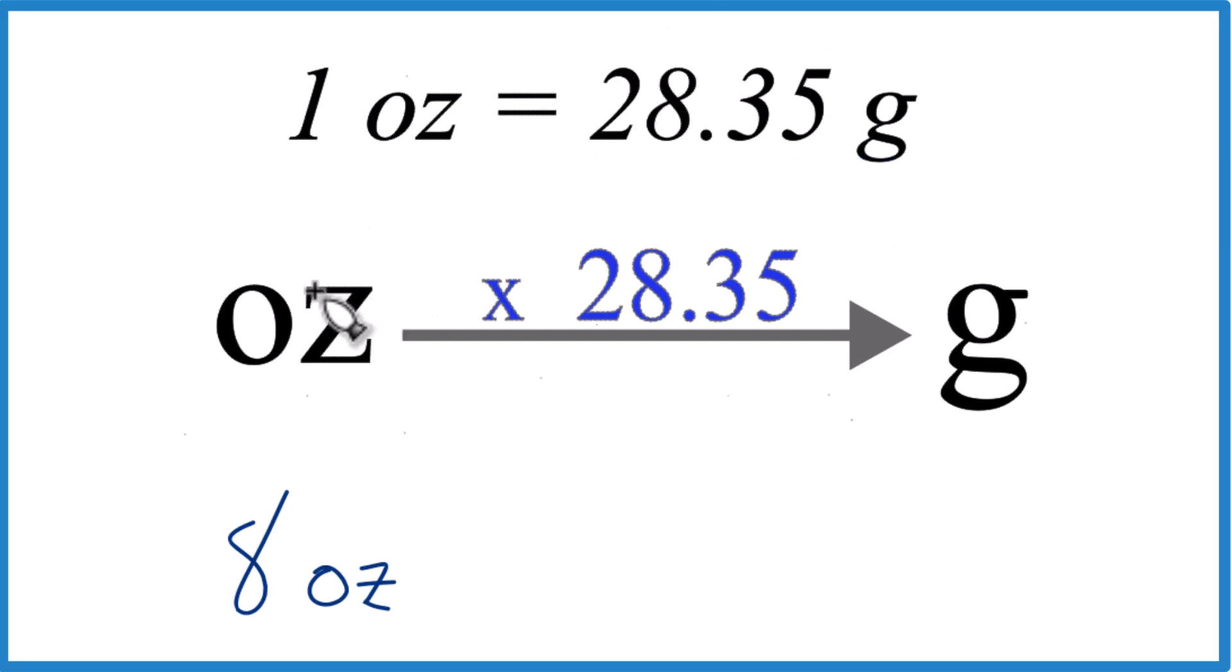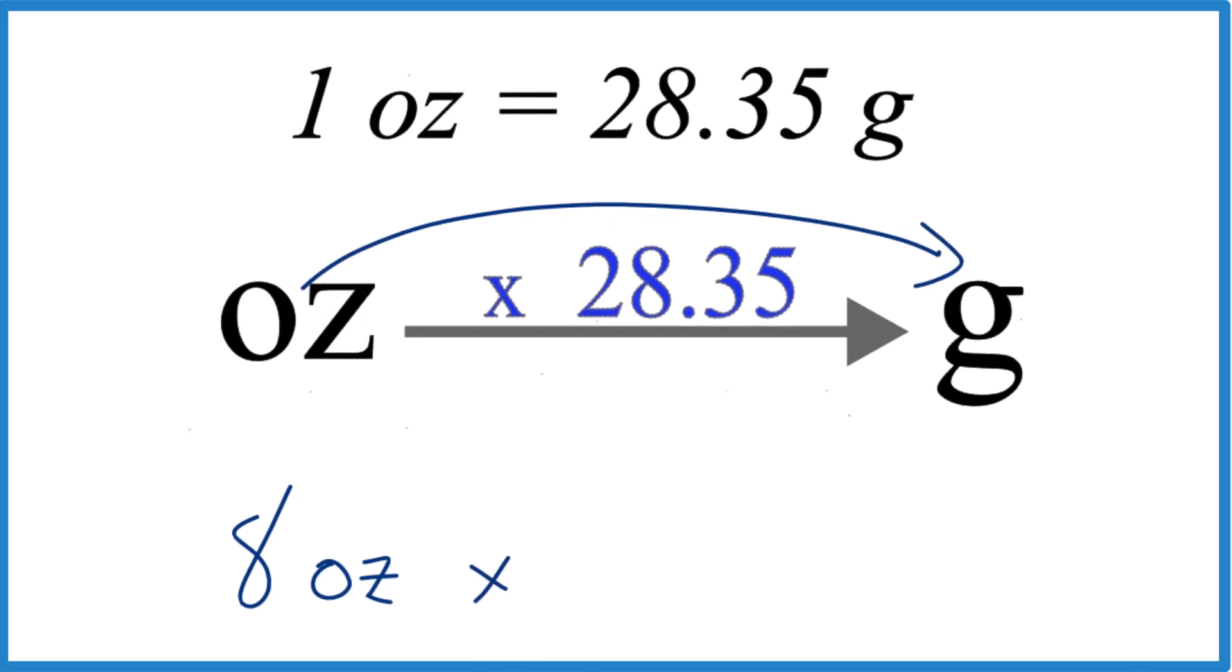So we want to go from ounces to grams. We're going to multiply by our conversion factor, the 28.35, like this here.